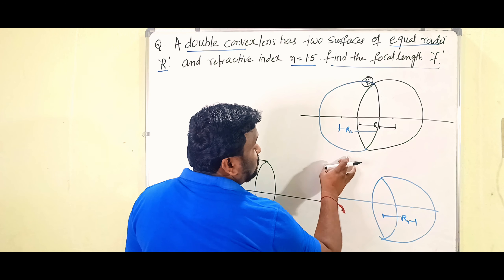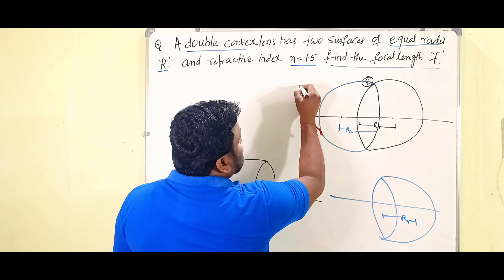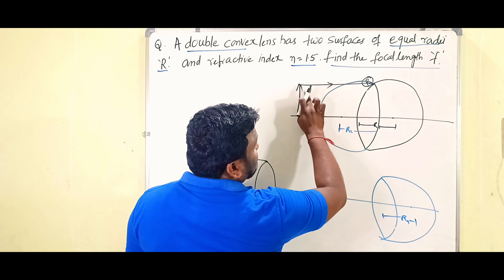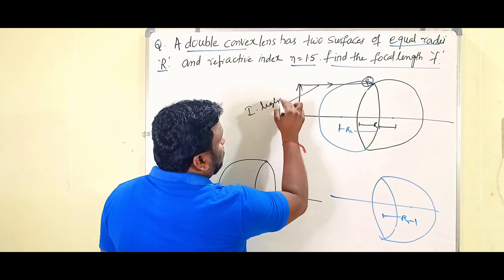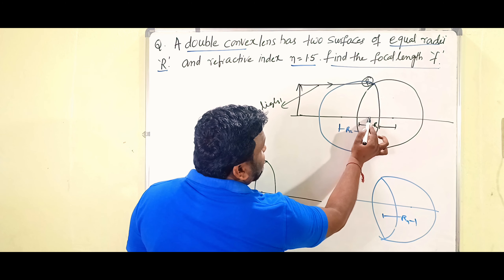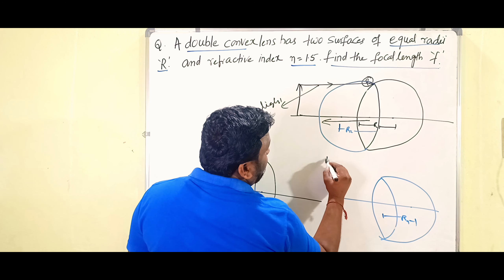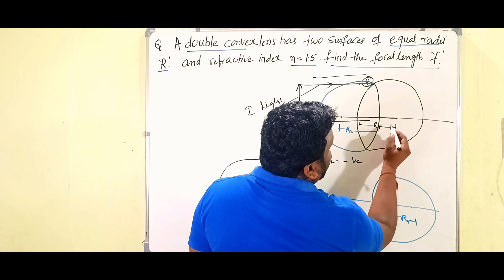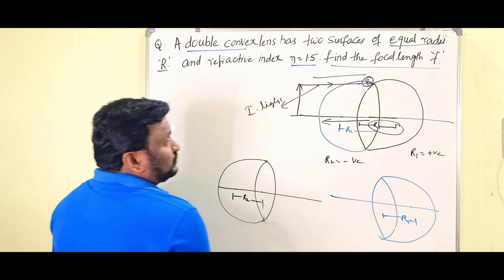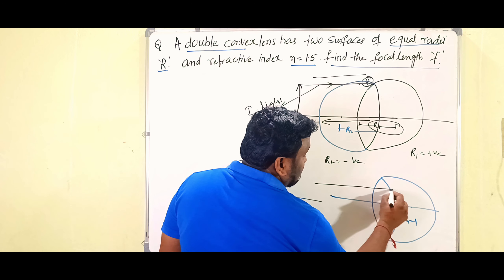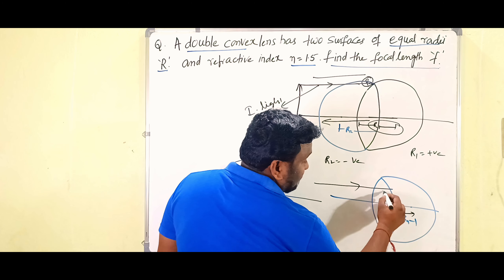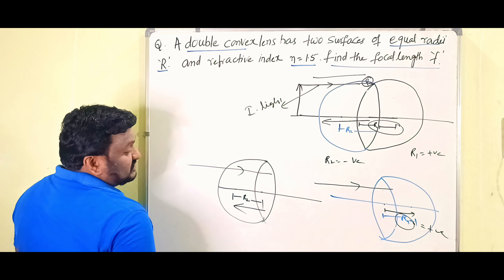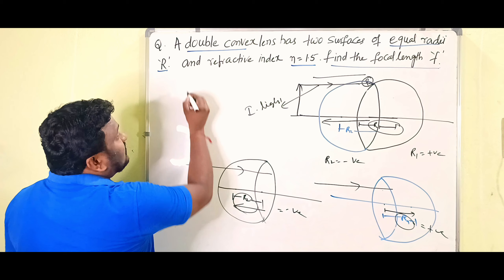Now, which of r1 and r2 is positive and which is negative? The object is on the left and light travels in this direction — that is the incident light. r2 is taken opposite to the direction of incident light, so r2 is negative. r1 is in the same direction as the incident light, so r1 is positive.